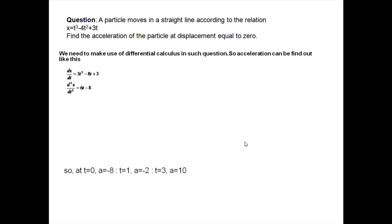The first question I would like to discuss is: a particle moves in a straight line according to the relation x = t³ - 4t² + 3t. We need to find the acceleration of the particle at displacement equal to zero.